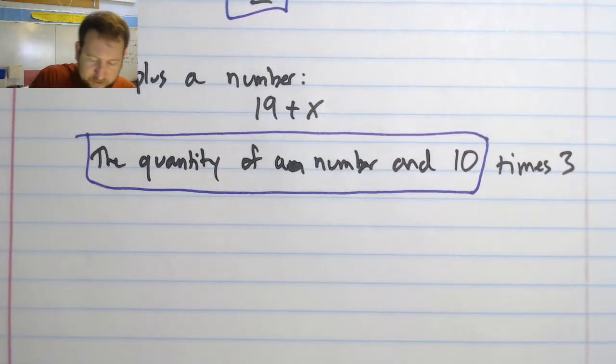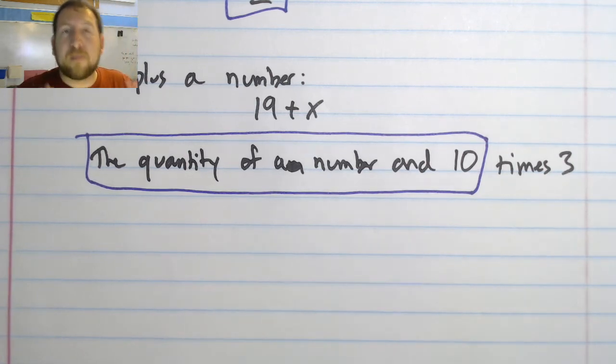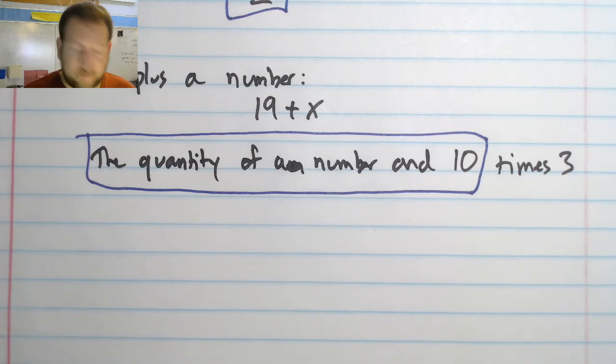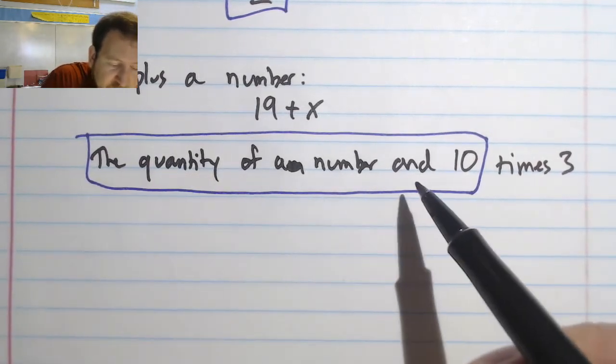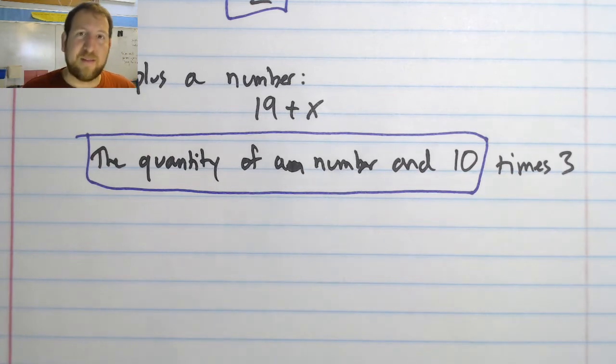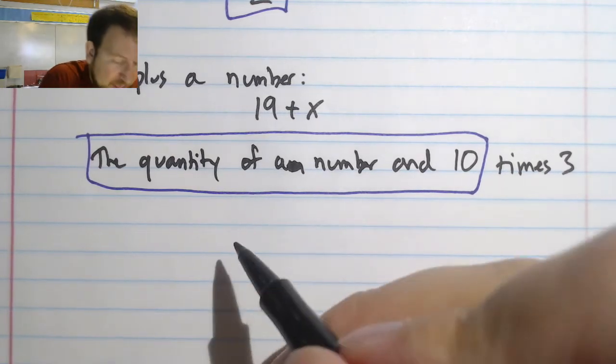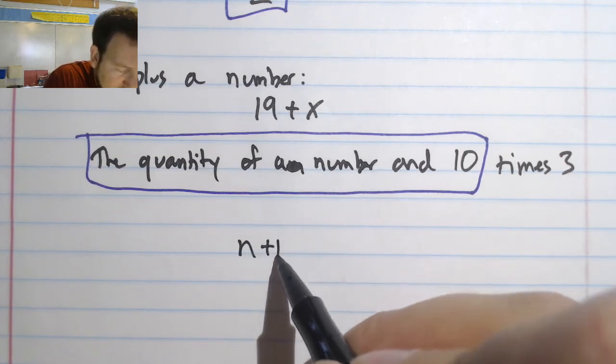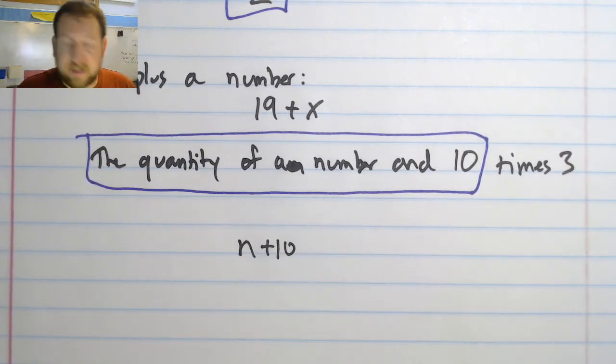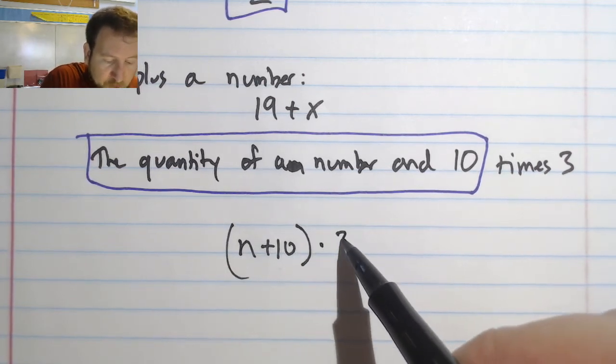Whenever we see the word quantity like this, it means something in particular, something very specific in math. What it means is that we're going to put parentheses around it and we're going to do it first. So if we see the quantity of a number and 10, a number and 10 means I'm going to add that together. So it's going to be a number—let's use n for a number in this case—a number + 10.